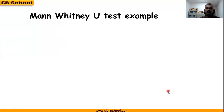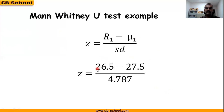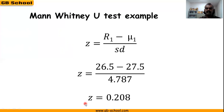Then we use the Z formula: Z equals R1 minus mu1 divided by SD, which is 26.5 minus 27.5 divided by 4.787, giving a Z score of 0.208. Since the Z value is less than 1.96, we accept the null hypothesis, stating that there is no difference between these two groups.